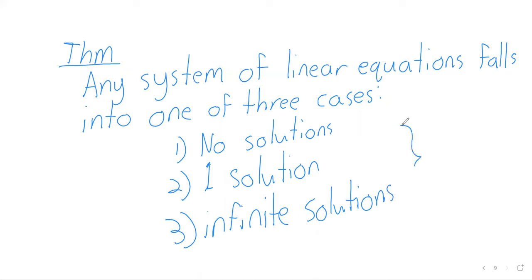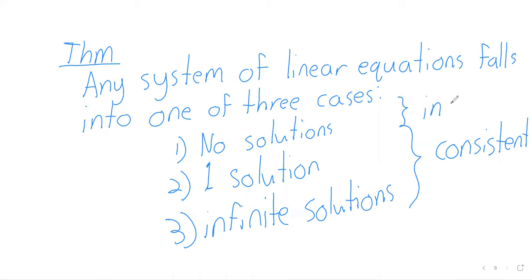A bit of terminology: if there is one solution or infinitely many solutions, we call the system consistent. If there are no solutions, the system is called inconsistent.